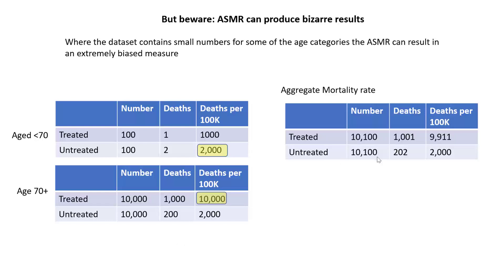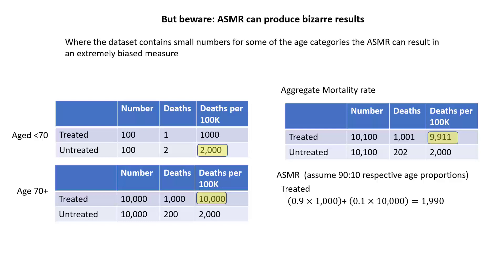In the simple aggregated figures, the mortality rate is very similar to the 70-plus category because almost all of the people were 70-plus, so the treated mortality rate is again almost five times that of the untreated. But things are very different when we use the age-standardized mortality rate. Assuming a 90/10 weighting — 90% under 70 and 10% are 70-plus — the age-standardized mortality rate is 1,990 for the treated (0.9 times that rate plus 0.1 times that rate) and 2,000 for the untreated.